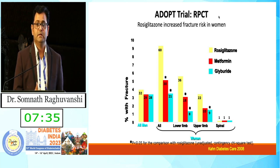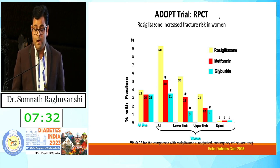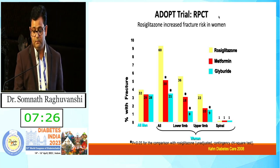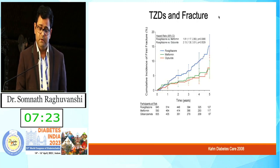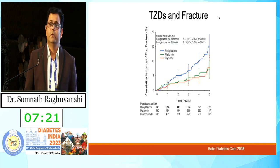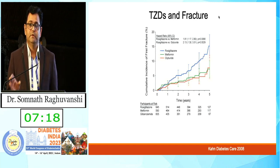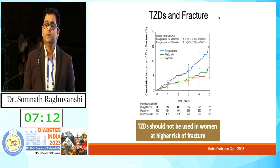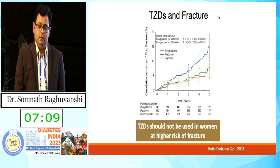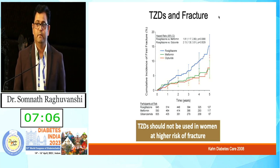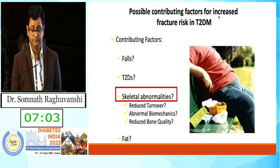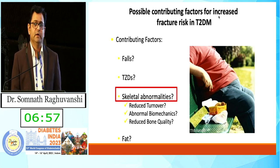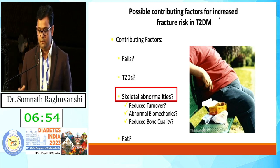The risk is particularly high for lower limb fractures, and lower limb fractures are associated with 36% mortality. Upper limb fractures are also increased, but not spine fractures — mostly peripheral sites are affected. With increasing duration of diabetes and duration of thiazolidinedione use (rosiglitazone or pioglitazone), fracture risk continuously increases. We should not use thiazolidinediones in post-menopausal women, as they increase marrow adipocytes and marrow fat.